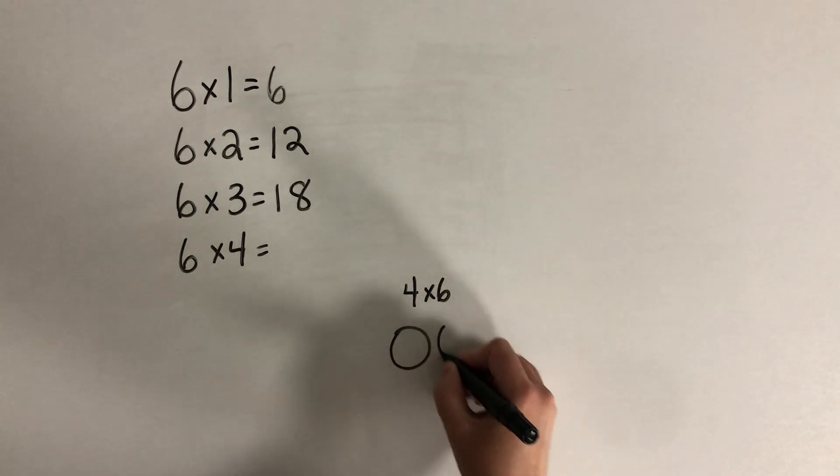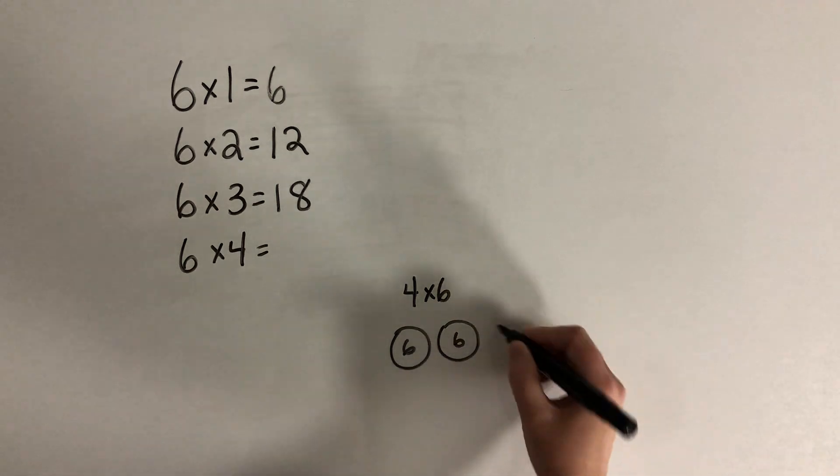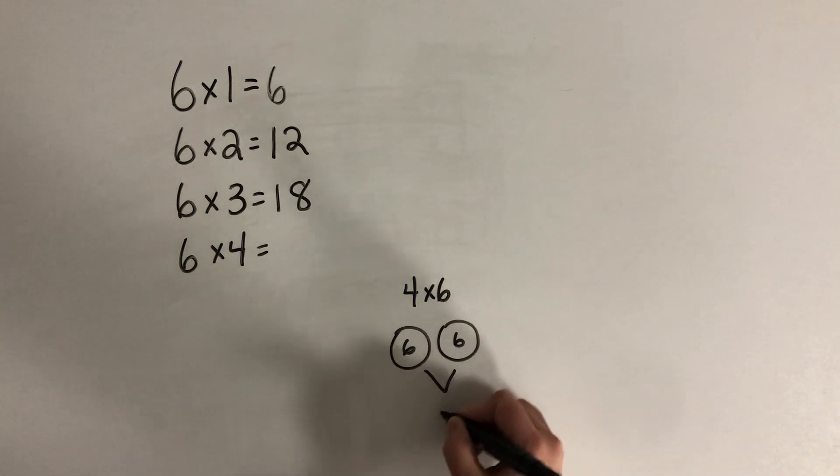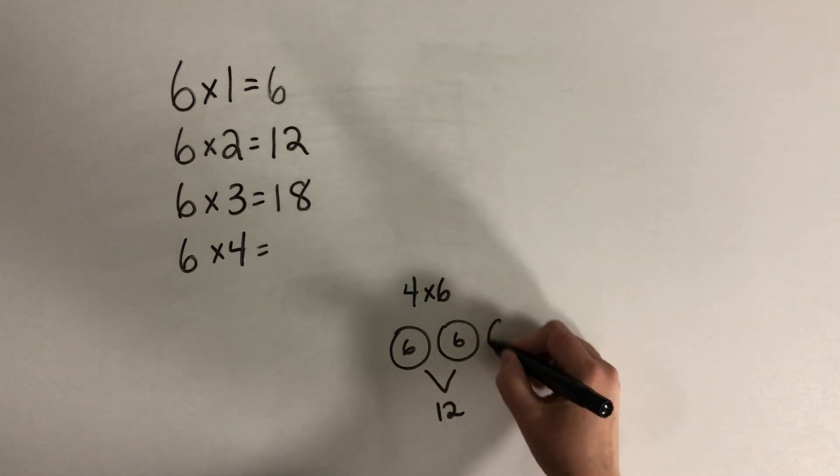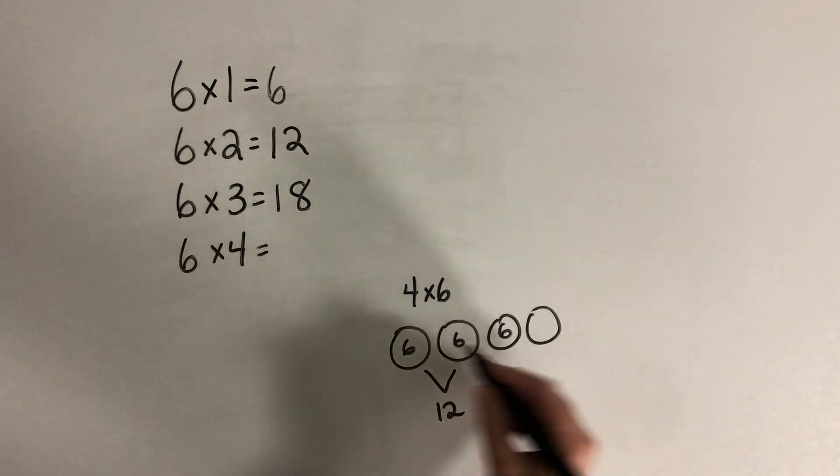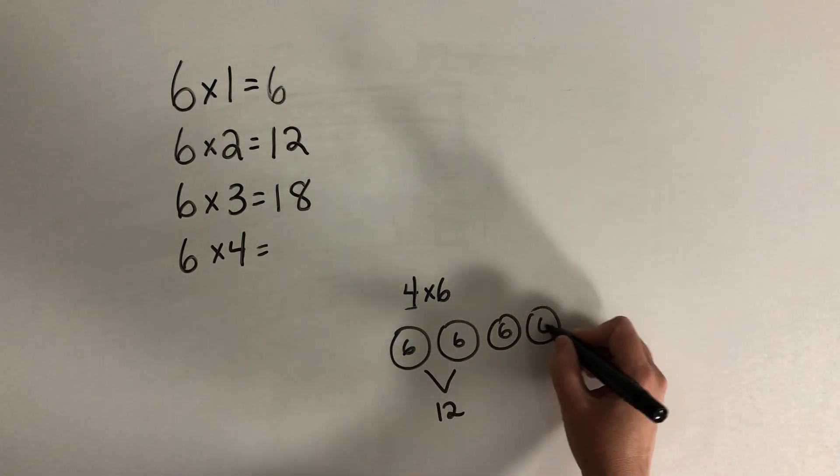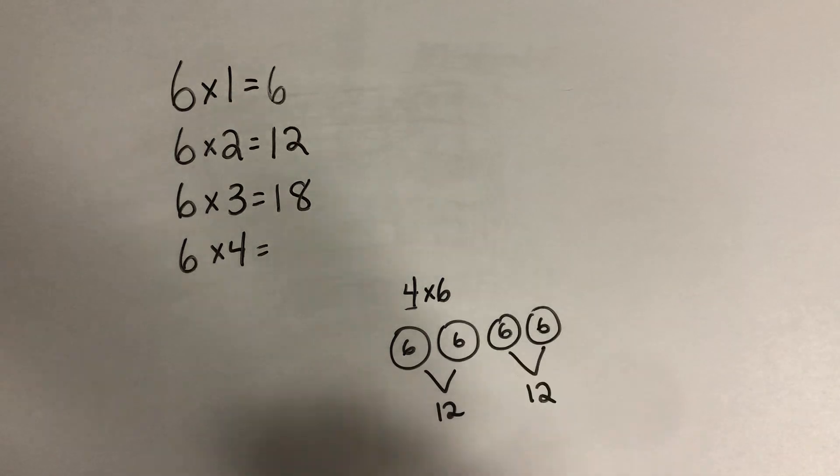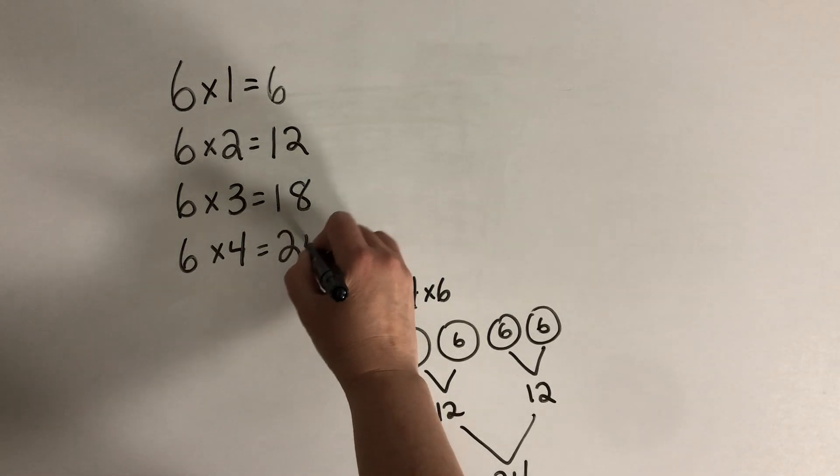So I can start with 2 groups of 6. And I know that that's 12. And then I can make just another 2 groups of 6, because I'm doubling the amount of groups. And that gives me another 12. And this gives me 24. So I know that 6 times 4 is 24.